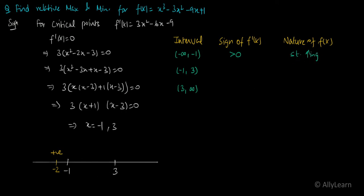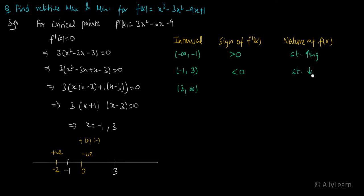Now for the interval (-1, 3), take x = 0. At x = 0: 3 is positive, (0+1) = 1 is positive, (0-3) = -3 is negative. Positive × positive × negative = negative. So f'(x) < 0, meaning the function is strictly decreasing in this interval.